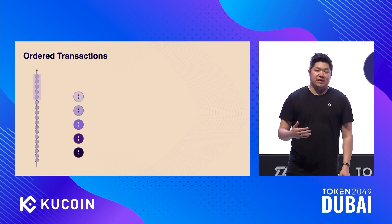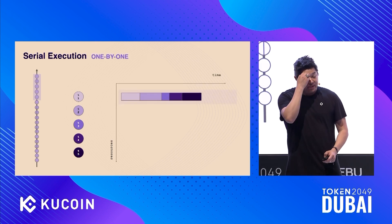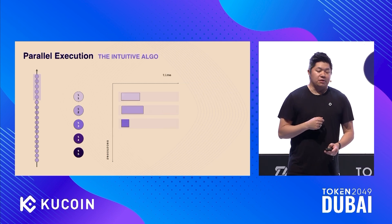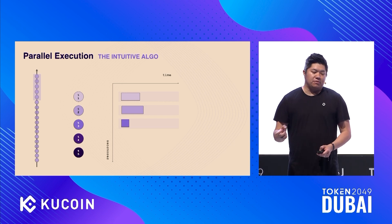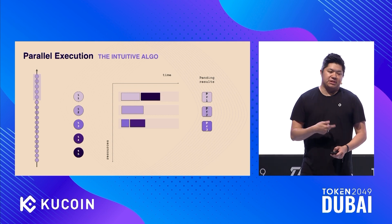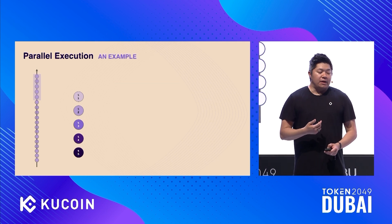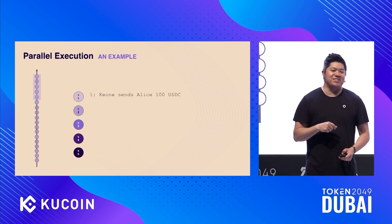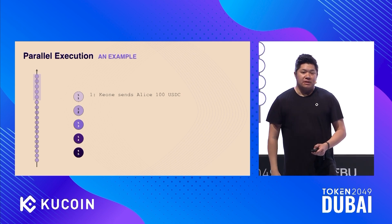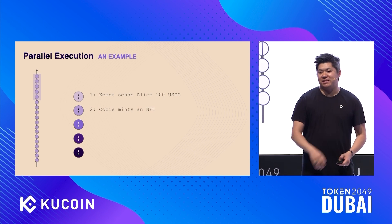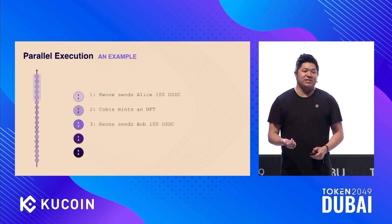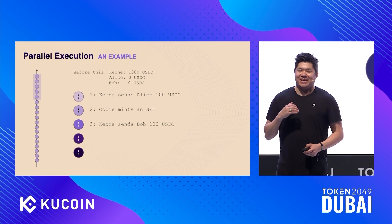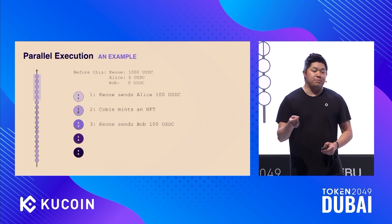To help understand this, here's a simple example. Say we have five transactions. The serial way is doing them one after another on the same core. The smarter thing is to run them on separate cores, and as soon as a core frees up, start doing another transaction, generating some pending results. Let's say the first transaction is me sending Alice 100 USDC, the second is Kobe minting an NFT — totally unrelated — and the third is me sending Bob 100 USDC. The starting state is that I have 1000 USDC and Bob and Alice both have zero.